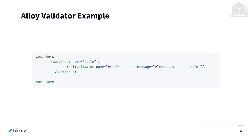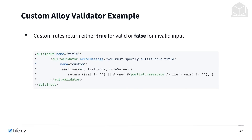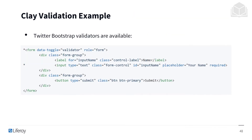Here is an example of the alloy validator in context — specifically, an AUI validator tag within an AUI input tag. Custom rules can be created, but they must return either true for valid or false for invalid inputs. Twitter Bootstrap validators are also available.